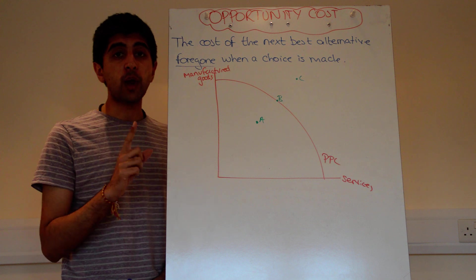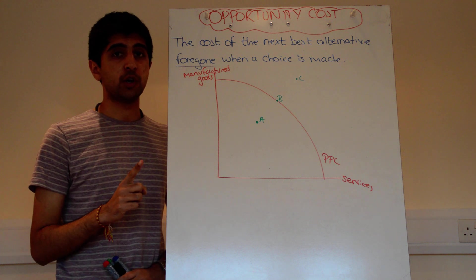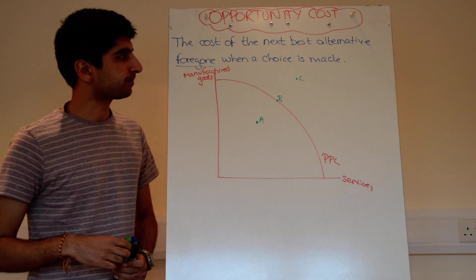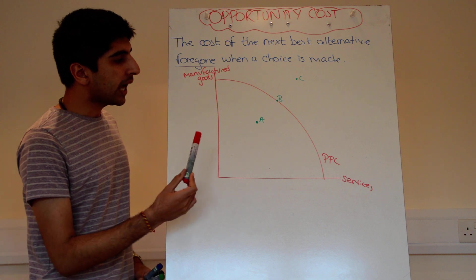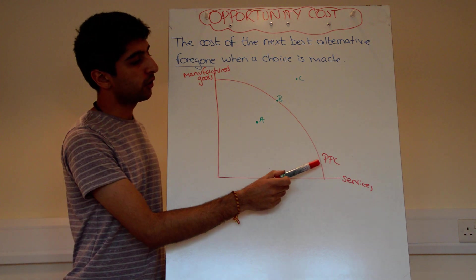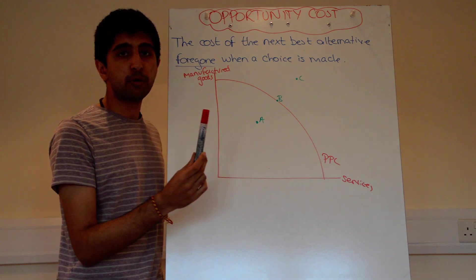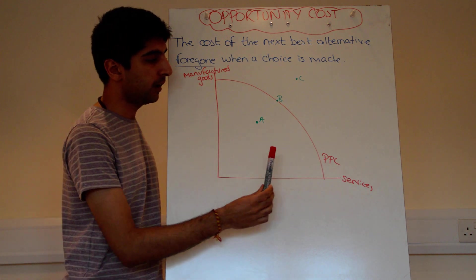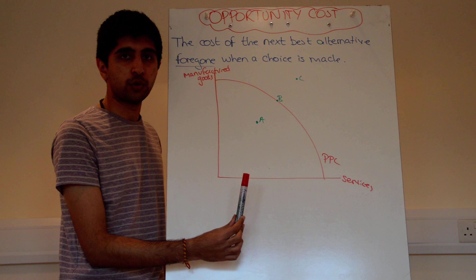There is no opportunity cost to free goods whatsoever. Whereas economic goods do have an opportunity cost — we are worried about how to allocate those. We can show opportunity cost on what we call a production possibility curve, a PPC for short.